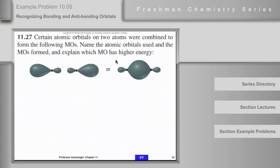I have one other question about this — it's from your textbook. Certain atomic orbitals on two atoms were combined to form the following MOs. Name the atomic orbitals used and the molecular orbitals formed, and explain which MO has the higher energy.